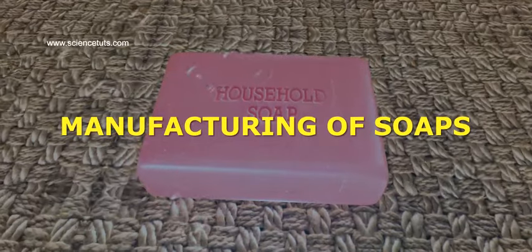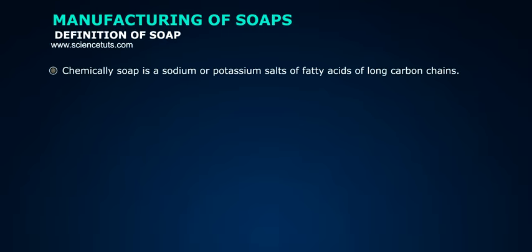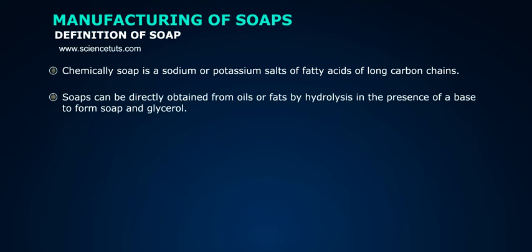Manufacturing of Soaps. Definition of Soap: Chemically, soap is sodium or potassium salts of fatty acids of long carbon chains. Soaps can be directly obtained from oils or fats by hydrolysis in the presence of a base to form soap and glycerol.